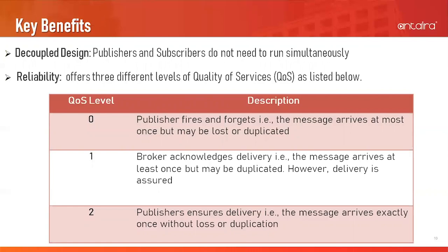When the quality of service level is set to one, the MQTT broker sends an acknowledgement message back to the publisher after receiving a message. If the publisher doesn't receive that acknowledgement, it will resend the original message. When the quality of service level is set to two, it guarantees that the message arrives at the broker exactly once, because quality of service level two involves several control messages between the publisher and the MQTT broker. The delivery overhead can significantly increase. Therefore, quality of service level two is the highest quality of service and is useful when message loss and duplication are not acceptable.